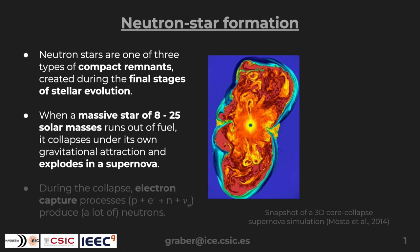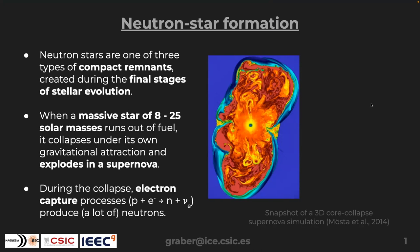What are neutron stars? They are one type of compact object created during the final stages of stellar evolution, specifically when a star with between about 8 to 25 solar masses runs out of fuel and collapses under its own gravitational attraction. The resulting inward collapse and outward bounce produces a supernova explosion. During this process we have electron capture: a proton and electron merge, producing lots of neutrinos and neutrons — that's where the name comes from.